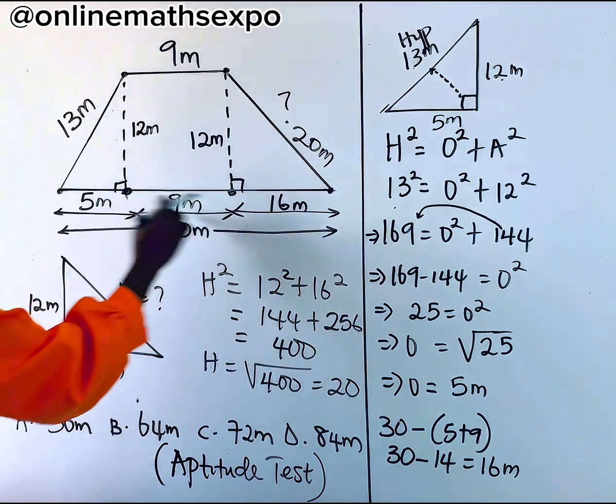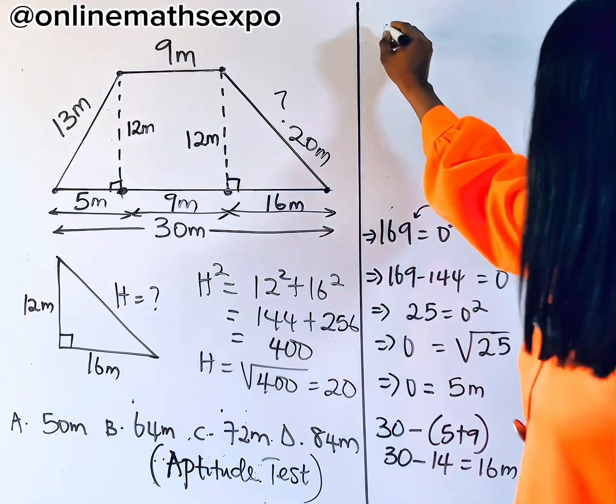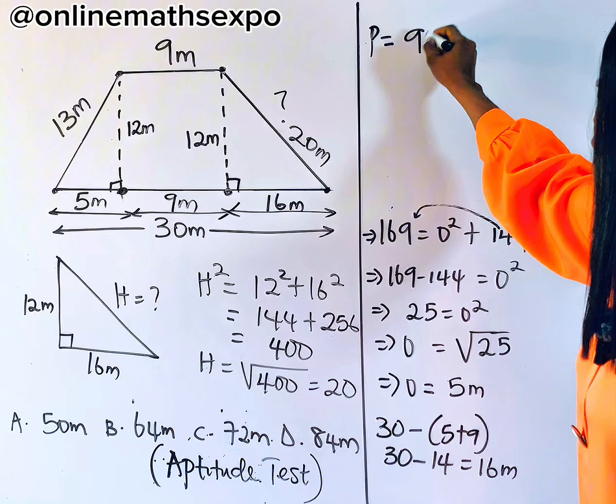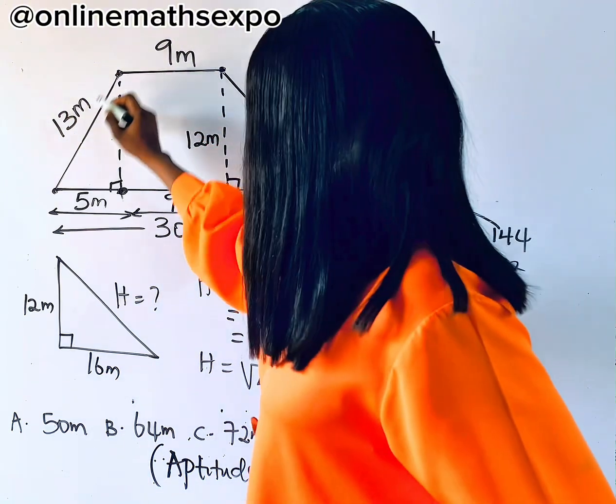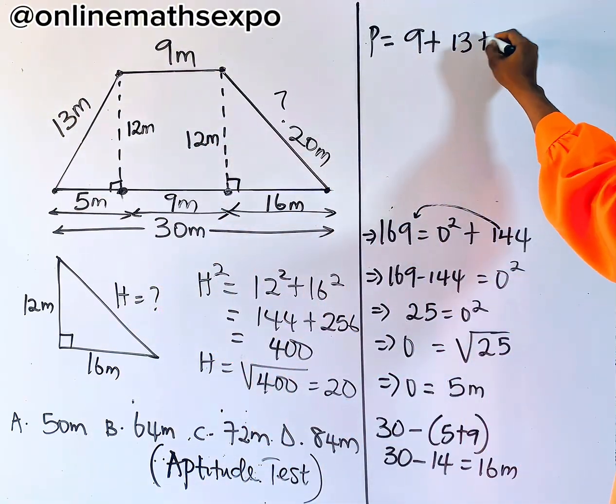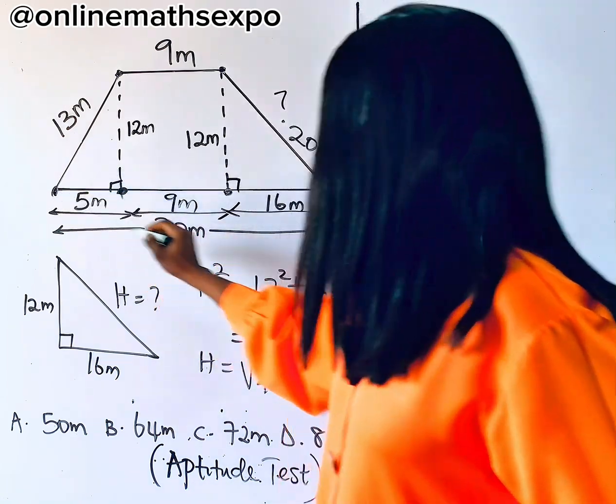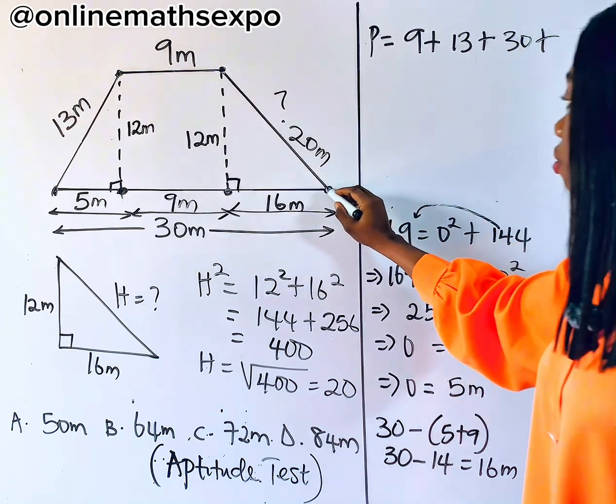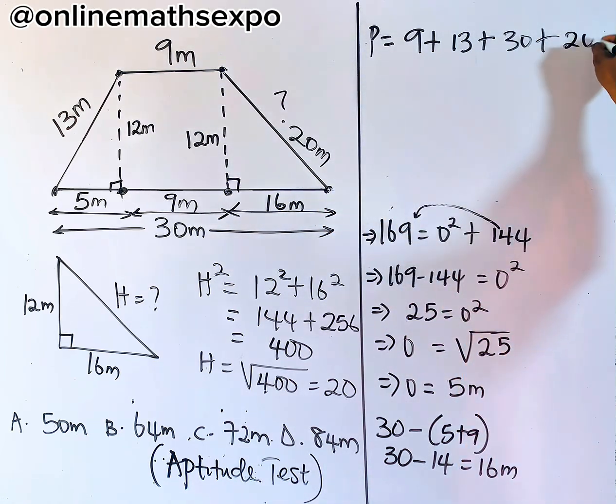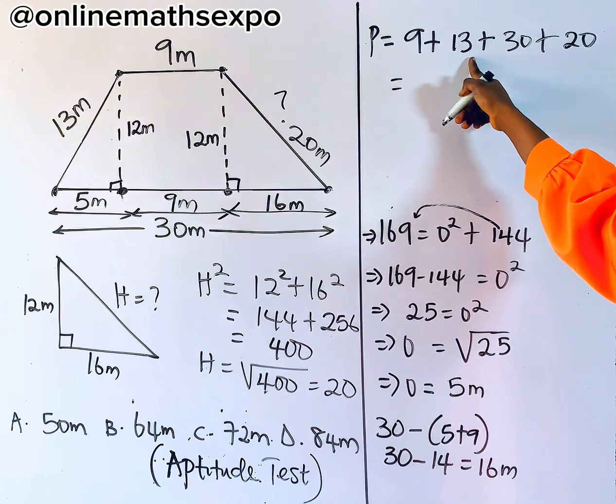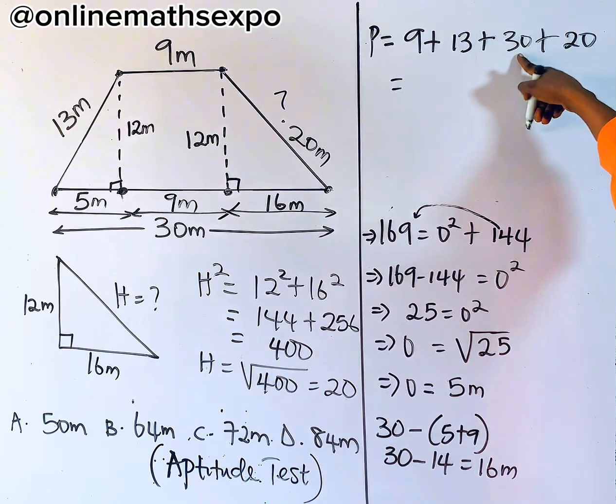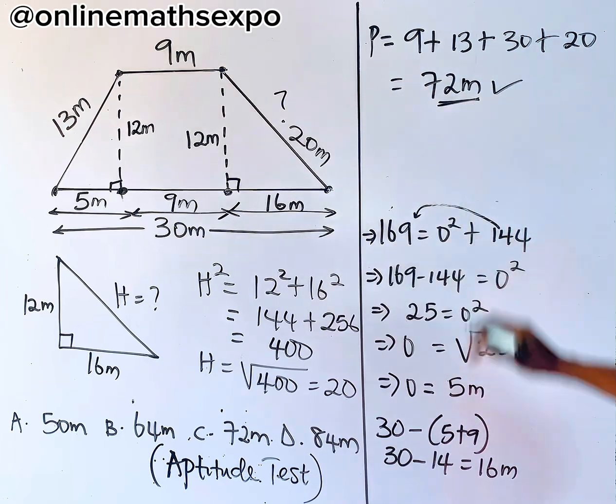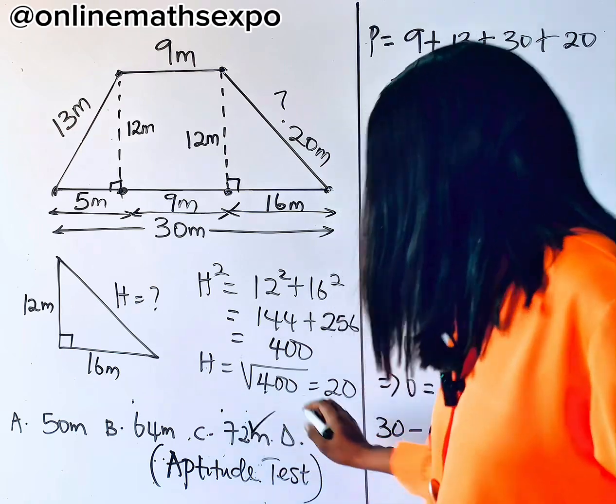And to get the perimeter we have, the perimeter of the field will now be from here to here is 9 plus from here to here is 13. From this end to this end is 30. Then finally, from here to here is 20. So quickly add this up. This is 22. This is 52. And this is 72. So we have 72 meters as the perimeter. And that is option C.